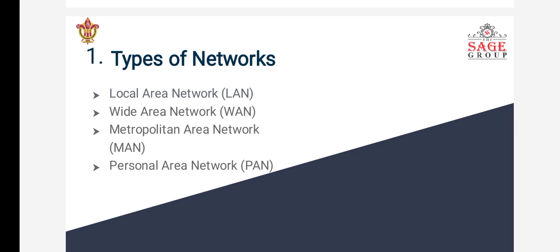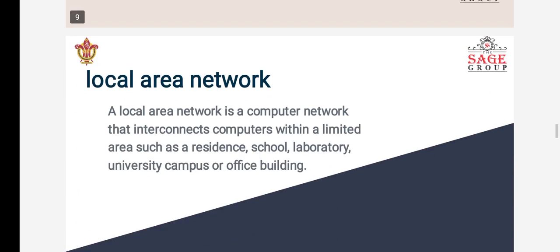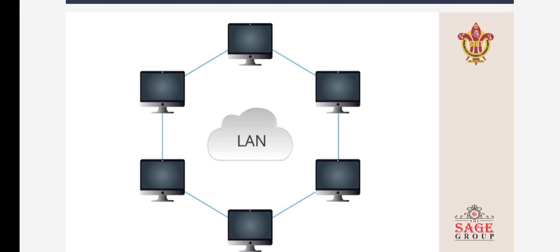The next topic is types of network. In computer networking, there are four basic types: Local Area Network (LAN), Wide Area Network (WAN), Metropolitan Area Network (MAN), and Personal Area Network (PAN). A Local Area Network is a computer network that interconnects computers within a limited area such as schools, colleges, university campuses, and office buildings. This is the diagram for LAN where a number of computers are connected in a network.